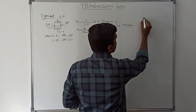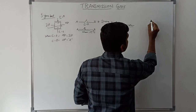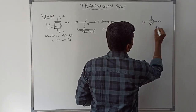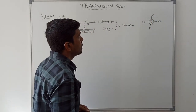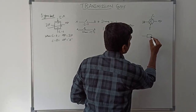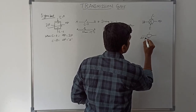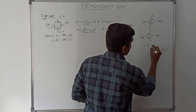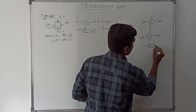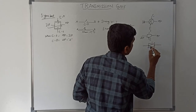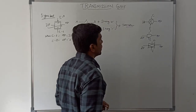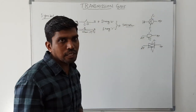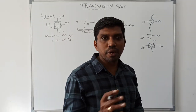In other books and articles, the transmission gate symbol may appear in different forms. One type shows input, output, C-bar and C. Another type shows input, output, C and C-bar. A third variant shows input, output, C-bar and C in a different arrangement. These symbols are all called transmission gate. Now I am going to design logic gates using transmission gate.